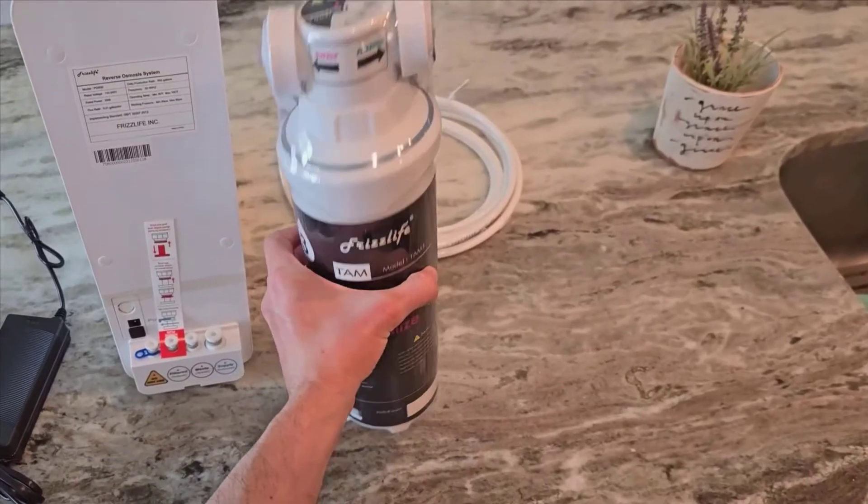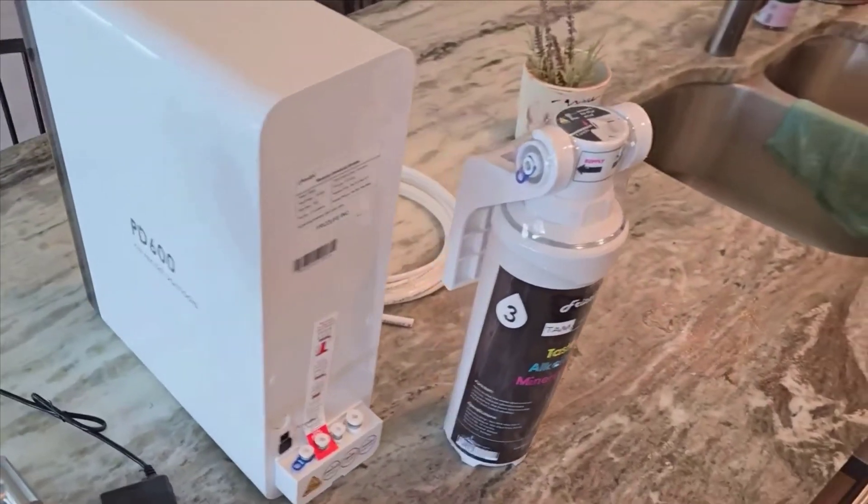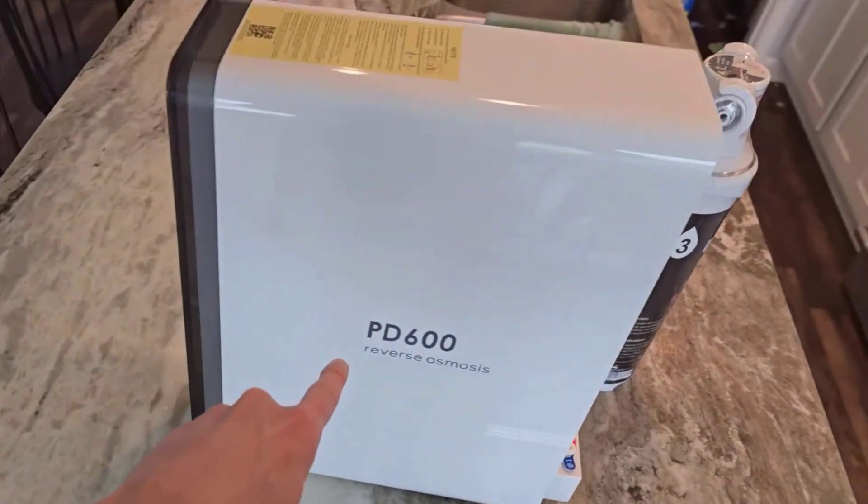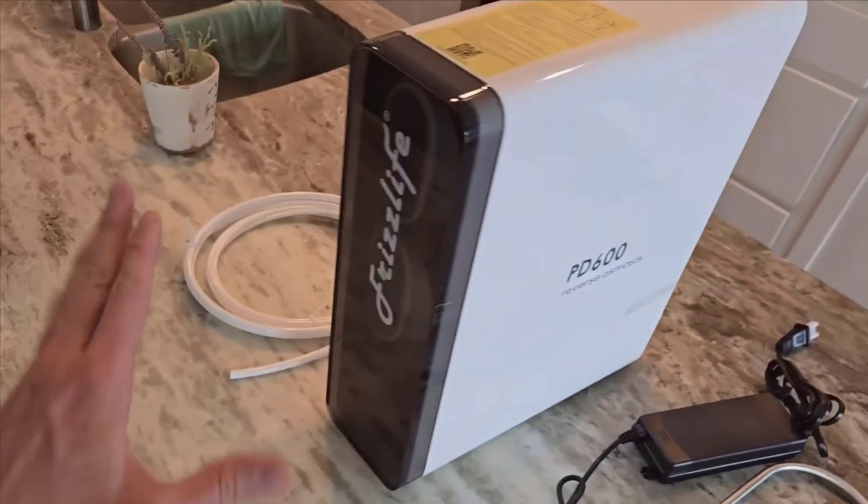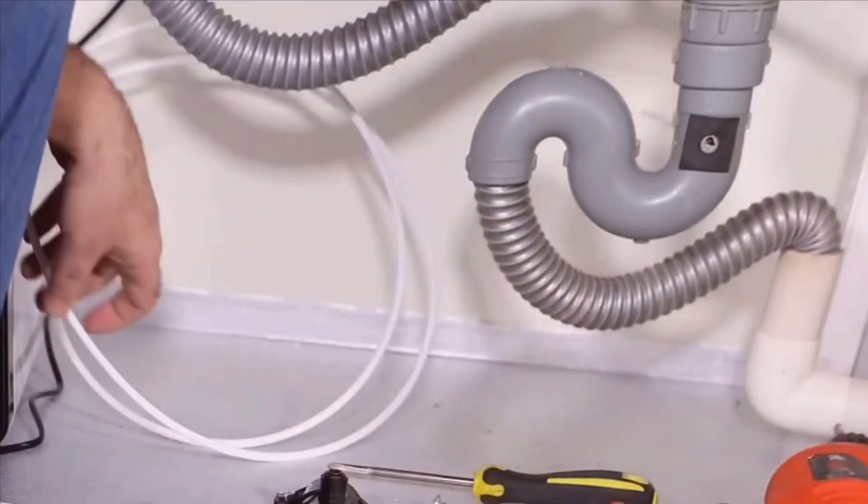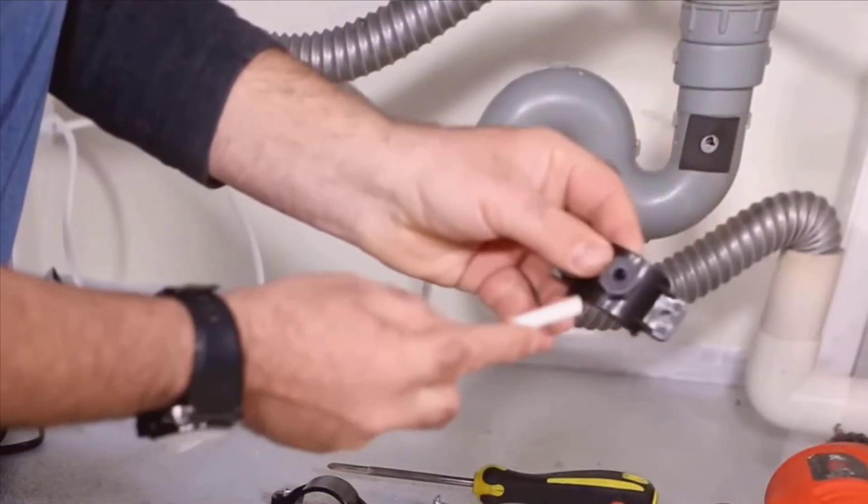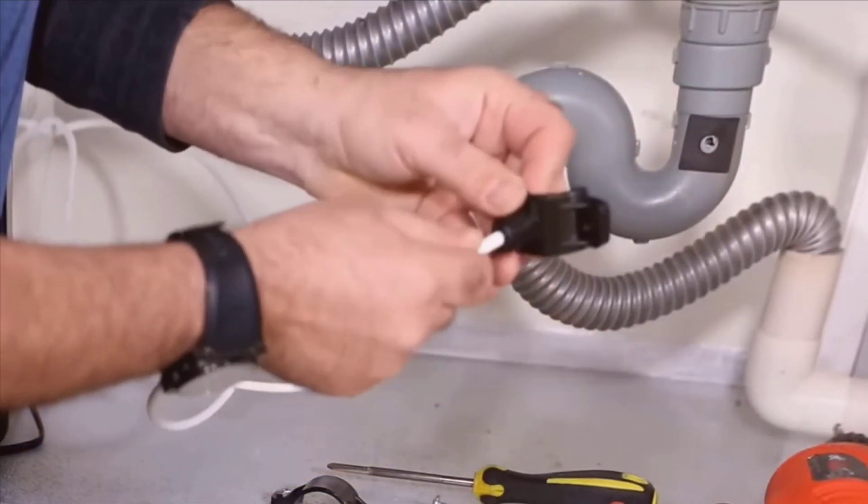What really sets the FrizzLife Roe system apart is its unique ability to not only purify water, but also enhance it by reintroducing essential minerals. Unlike other filtration systems that strip your water of both contaminants and beneficial minerals, the FrizzLife system makes your water slightly alkaline, which is fantastic for your health.